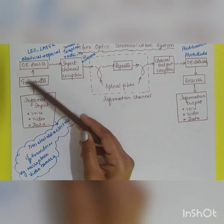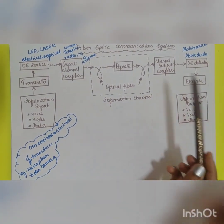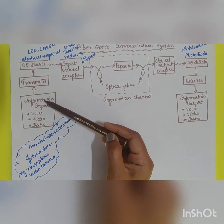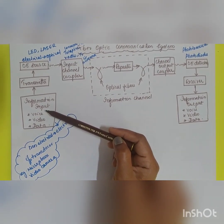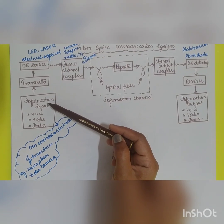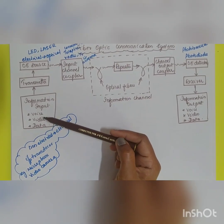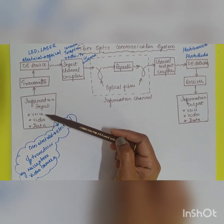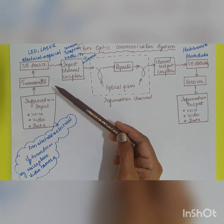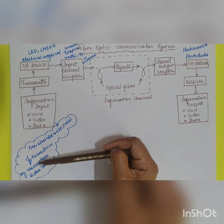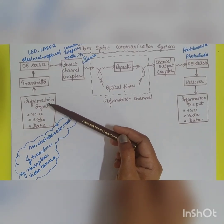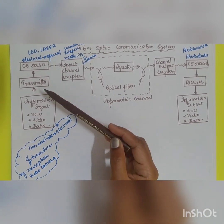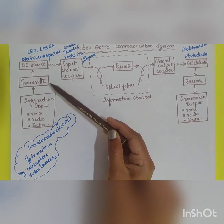This will be the input side and this will be the output side. The information input — which can be voice, video, or data — mainly consists of an input transducer that converts a non-electrical signal into an electrical signal. Examples include a microphone, which converts sound into an electrical signal, or a video camera, which converts an image into an electrical signal.